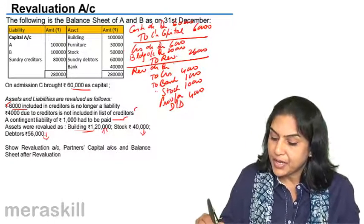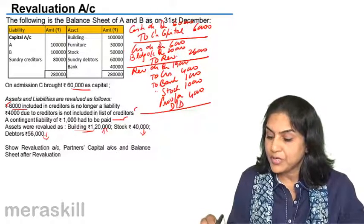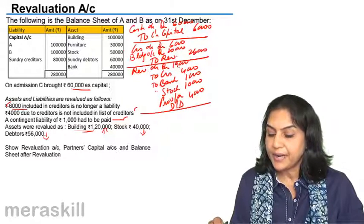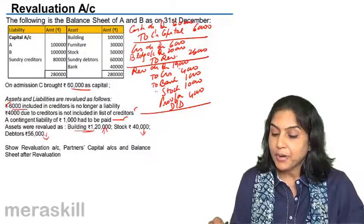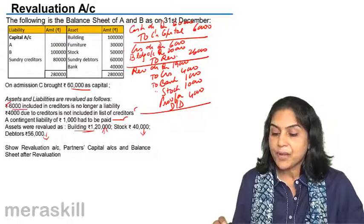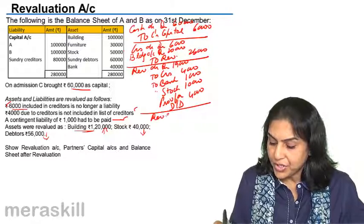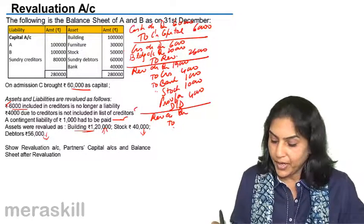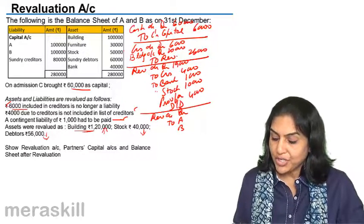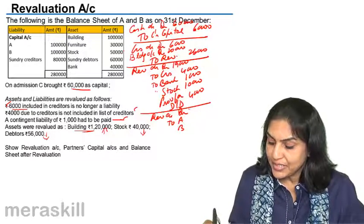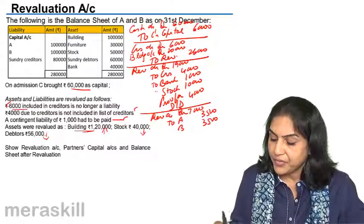This becomes 19,000, so there is a profit of 7,000. Revaluation account was debited by 19,000 — this is a loss — increase in liabilities and decrease in assets. But we made a gain of 26,000, therefore the net profit is 7,000. Revaluation account debit to A and to B. Nothing has been mentioned about profit sharing ratio, so we assume it is equal — 3,500 and 3,500.